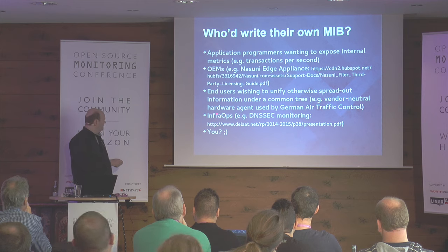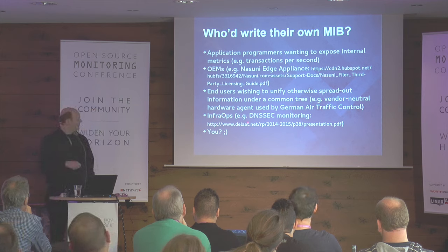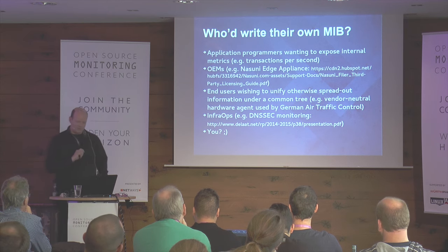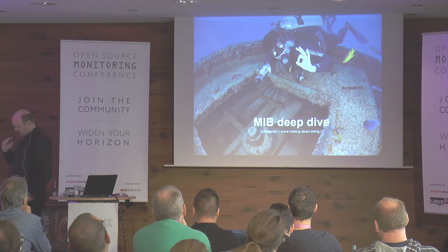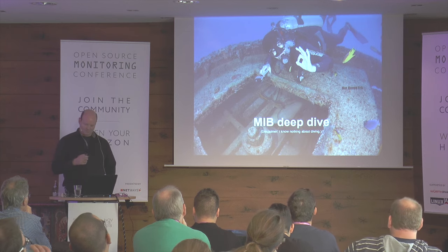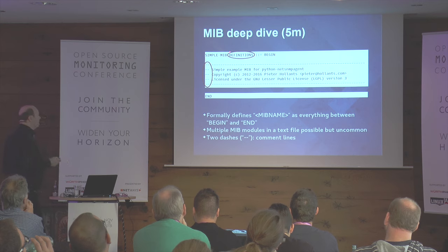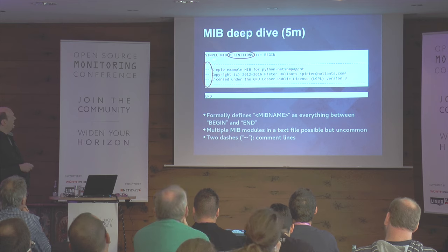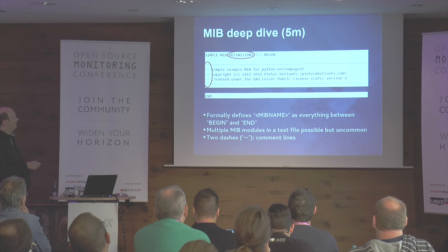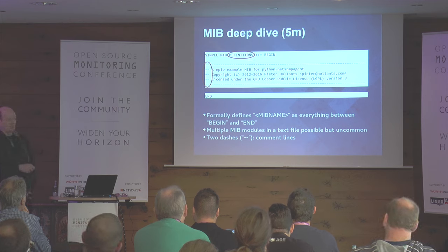Then there's the hype word: InfoOps. Some guys from the Netherlands did DNSSEC monitoring with the module we're going to see later. Now let's do a MIB deep dive. This is a MIB. As I said, it's an ASCII text file. It has a BEGIN statement and an END statement. Everything in between is defined to be the MIB. This is an example of SMI, which is also ASN.1. You can have comments with double dashes.